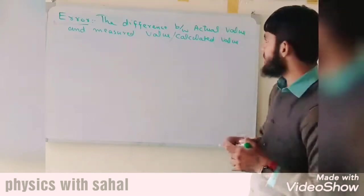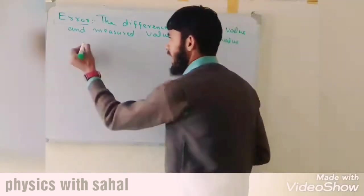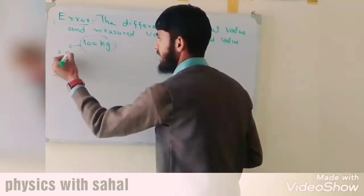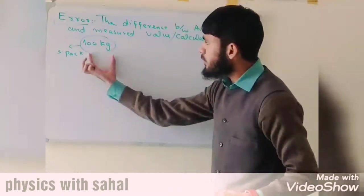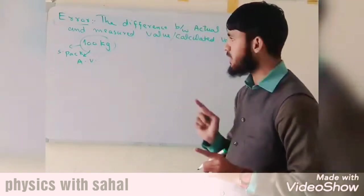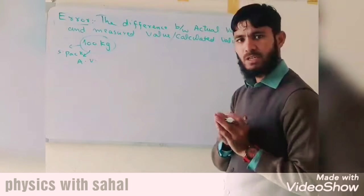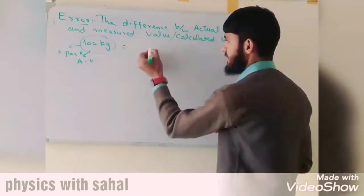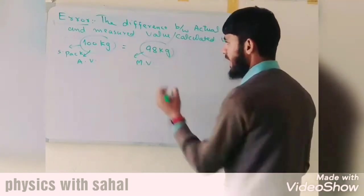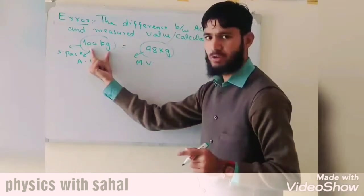The difference between actual value and measured value is called error. For example, we have a 100 kg sugar pack. This 100 kg is called the actual value of the sugar pack. Someone wants to measure this value and after measurement finds it is not 100 kg but 98 kg. This 98 kg is the measured value, because it is the value obtained after measurement.